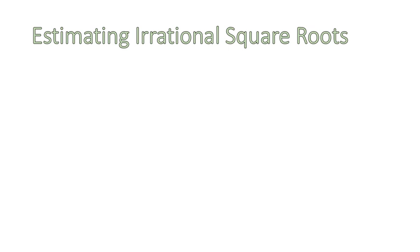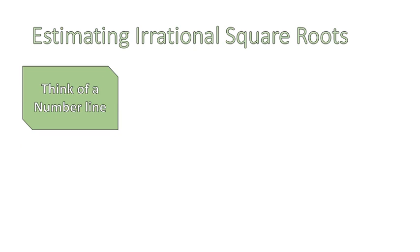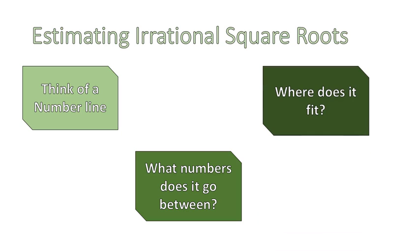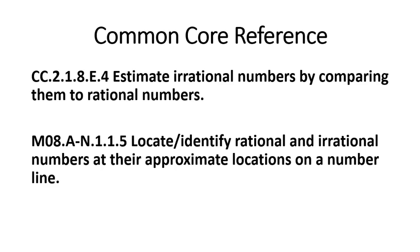Quick recall on estimating irrational square roots — the toughest part: think of a number line, ask where the value fits between two integers, and determine if it's closer to one number or the other. We also covered simplifying a fraction into a decimal, locating a decimal on a number line, and locating a perfect square on a number line. Hope the lesson has been helpful — here is our Common Core reference. Have a wonderful day.